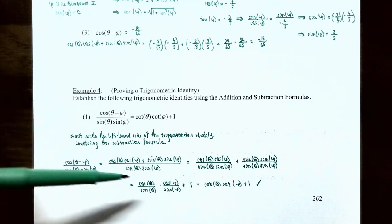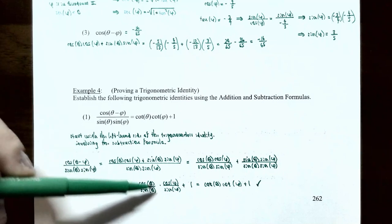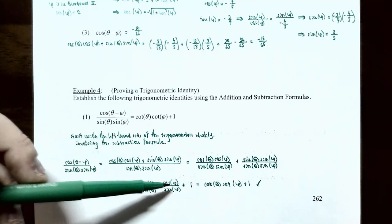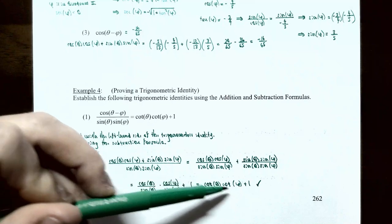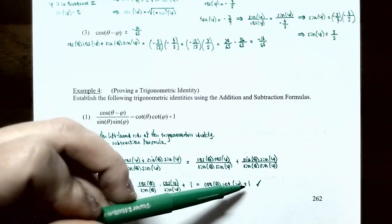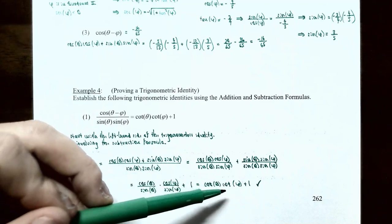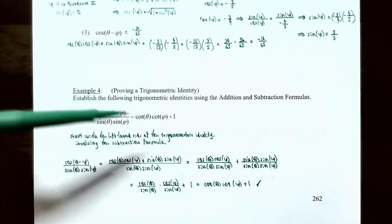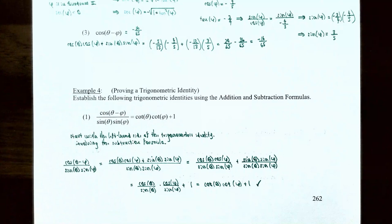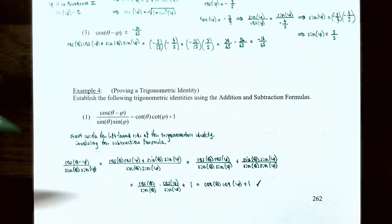Cosine of theta divided by sine of theta is cotangent of theta, and cosine of phi divided by sine of phi is cotangent of phi. So we have cotangent theta times cotangent phi plus one. That's exactly the right-hand side of the trigonometric identity, so we've proved it. We started with the left-hand side and used algebra and trigonometric identities to establish the right-hand side.